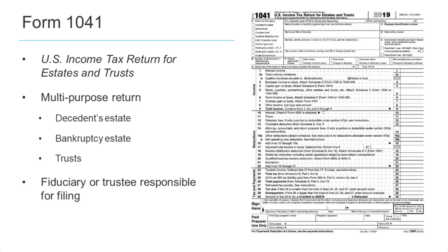Form 1041 is used by the decedent's estate if the estate has sufficient income to require the preparation of an income tax return. It's also utilized by a bankruptcy estate, and finally by trusts — there can be a couple of different types. If you look at the extreme left corner of the form, there is a checkbox section that distinguishes which type of entity is filing this 1041.